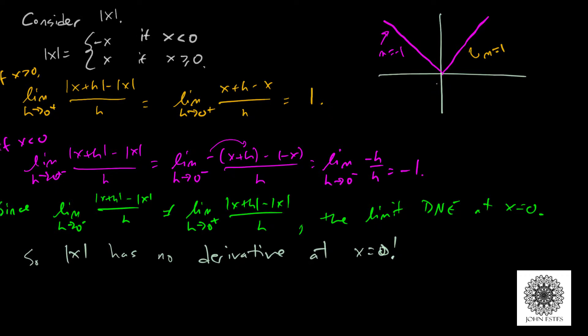So right at 0 then, the slope doesn't trend towards anything. It trends to two different things. If you graph the derivative of this guy, what we have is a solid 1 on the right-hand side and a solid negative 1 on the left-hand side. And so at 0, there's no value.